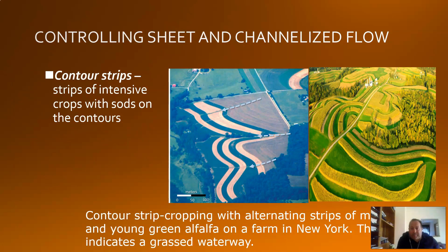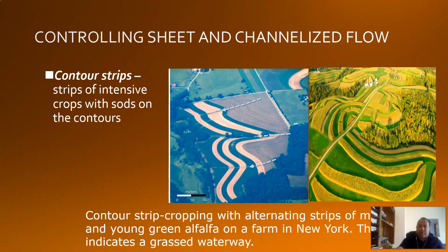Another way is to make contour strips — strips of intensive crops with sod on the contours, which is not quite the same as full terracing but involves making a couple of contour strips. The arrows in the bottom picture indicate the waterway. We know water is going to be an issue on this land, but we don't want it to be an issue for the crop, so we're creating that waterway to let the water go through, let gravity take its course, and hopefully not affect the crop.